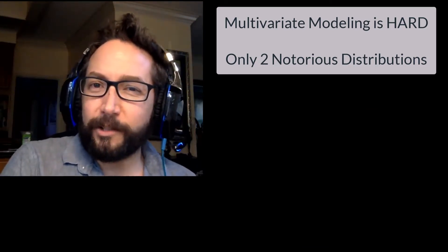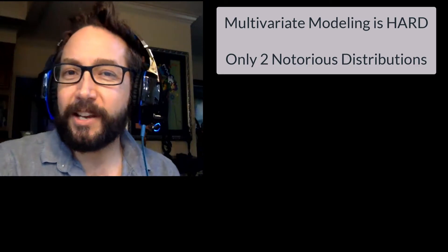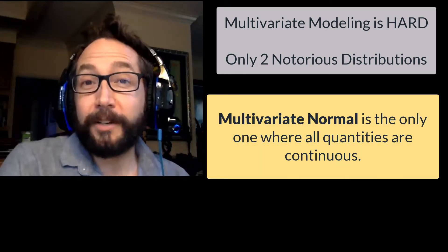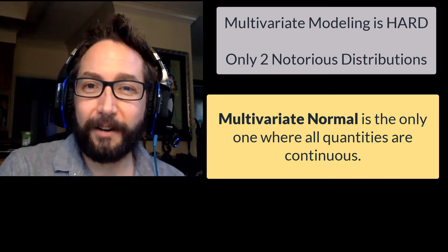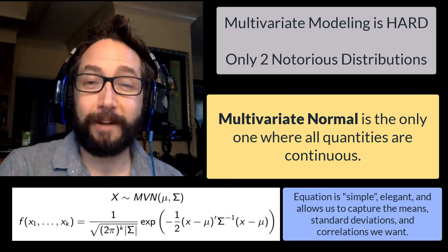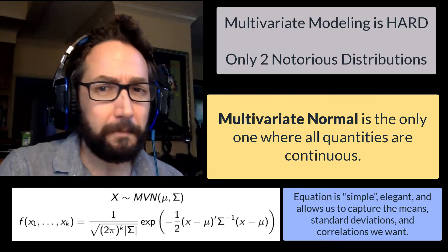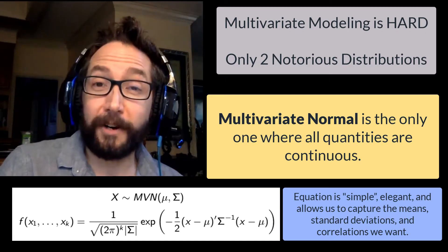The one notorious distribution we have for the continuous zoo is the multivariate normal distribution, and this is because it's one of the very few distributions where we can actually write down a formula for it. So let's talk about the multivariate normal distribution.